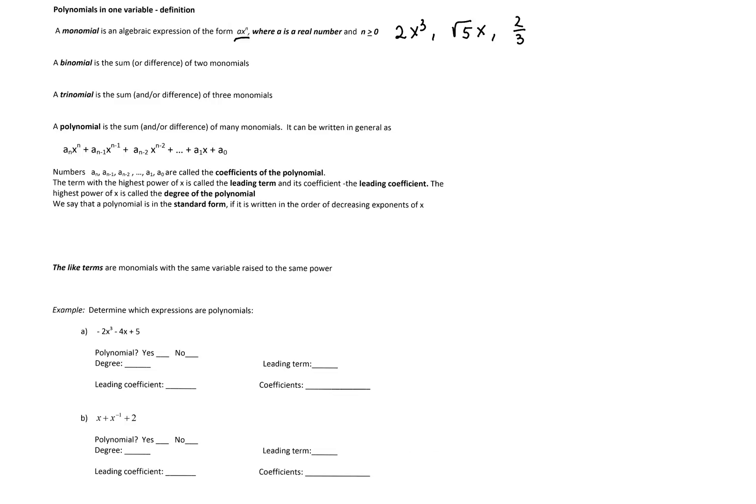The number a is called the coefficient of the monomial, and the power of x is called the degree of the monomial. Some polynomials have special names — a binomial is the sum of two monomials.